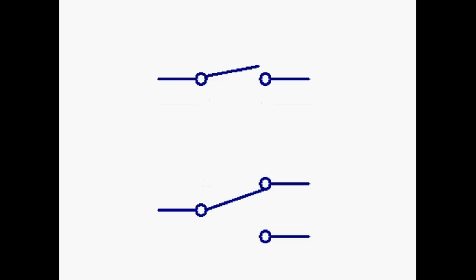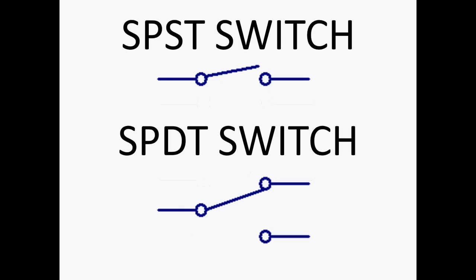These two are single pole, single throw switch and single pole, double throw switch. You need to be able to label those bits: the common, normally closed, normally open.